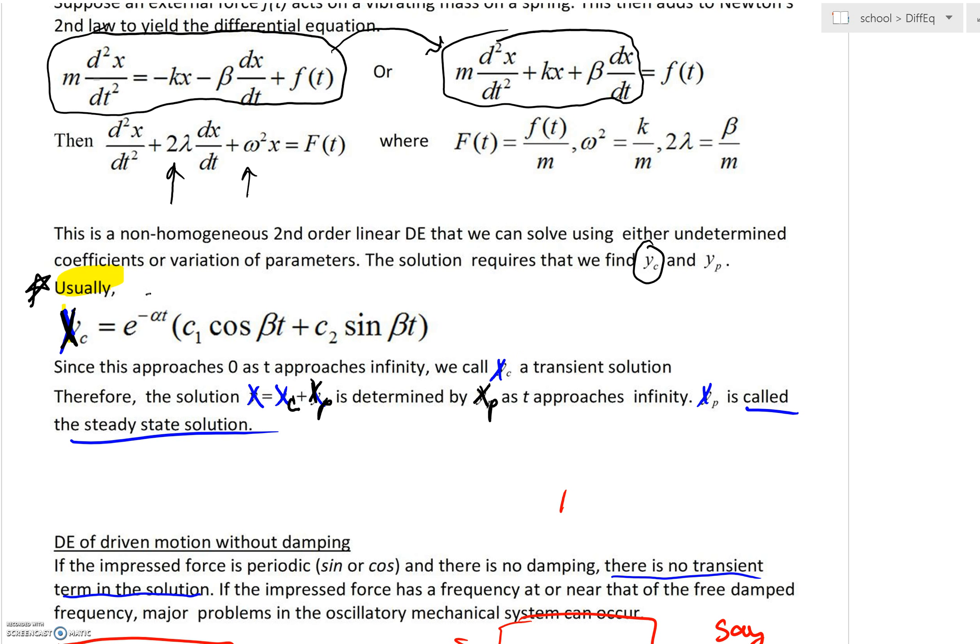Because e^(-αt), as t approaches infinity, we would have that go to zero, this is going to be known as a transient solution. Transient, that word really is implying it only lasts for a limited amount of time.